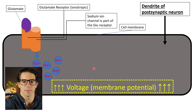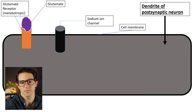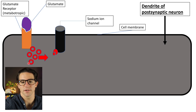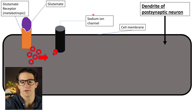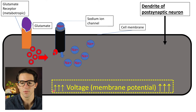Now let's talk about the metabotropic receptor. Glutamate binds to this receptor but it doesn't have its own ion channel. What happens is the binding of glutamate triggers a chemical reaction inside the cell — that's what those red circles and that red arrow represent — and that goes through a cascade of chemical reactions and affects a nearby sodium channel. That allows sodium to flow in, creating the same sort of result: the voltage of the membrane potential goes up and the cell is more likely to fire.